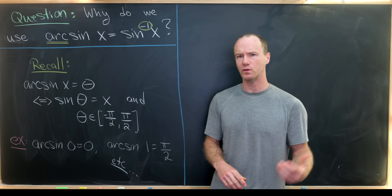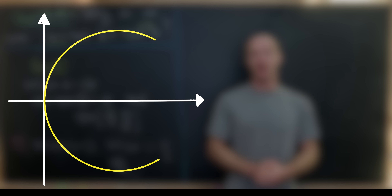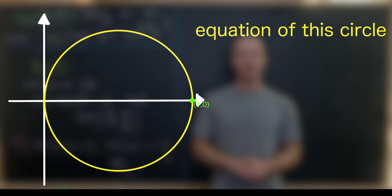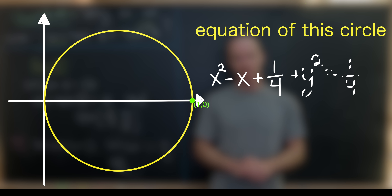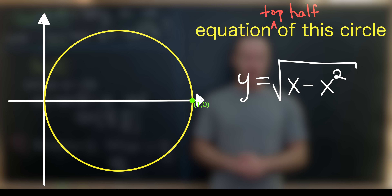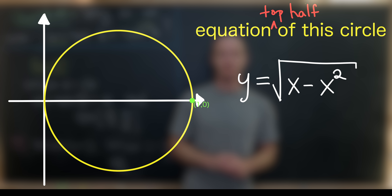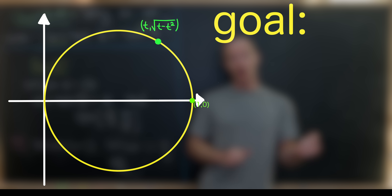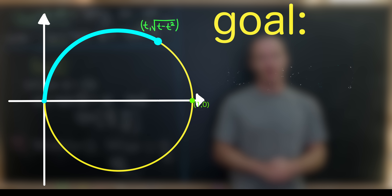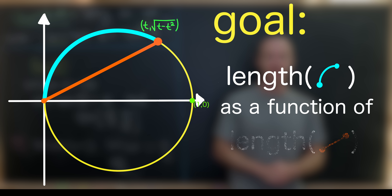Now let's dive into the real question: why do we have this prefix 'arc'? To answer that, we need to think about a circle with radius one half centered at the point (1/2, 0). We'll consider the arc along that circle from the origin to some arbitrary point on the top half, and compare that to the straight-line distance between the origin and the endpoint of that arc.